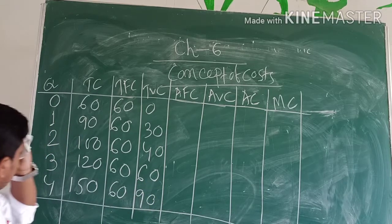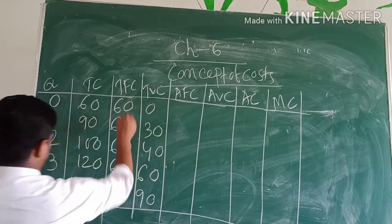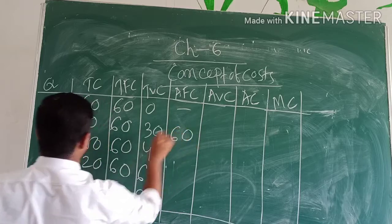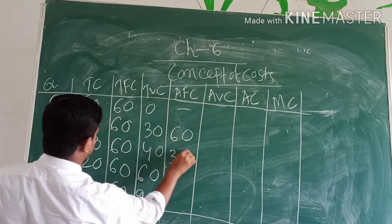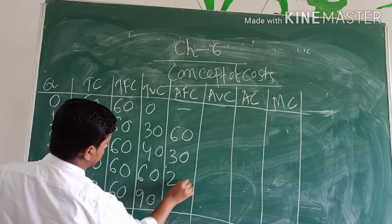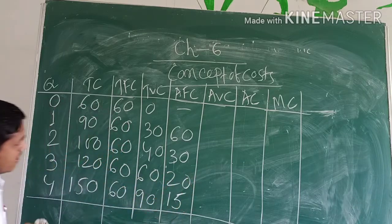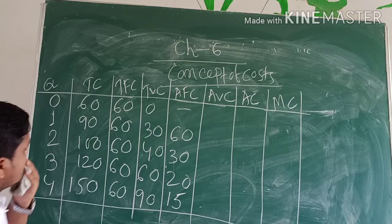Now we can find out the AFC. AFC is TFC by Q. It will be undefined, then 60, then 60 divided by 2 is 30, 60 divided by 3 is 20, then 60 divided by 4 is 15.